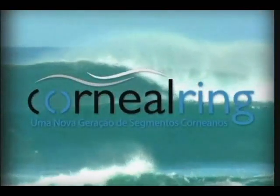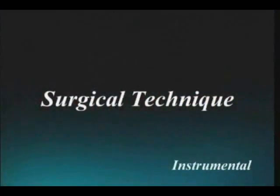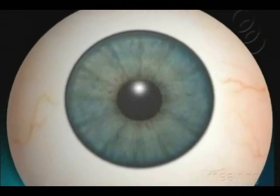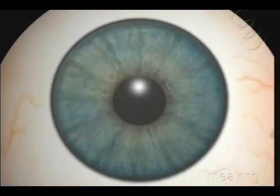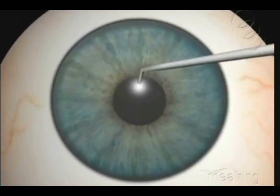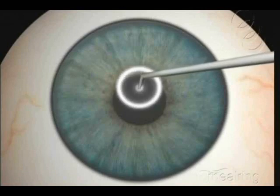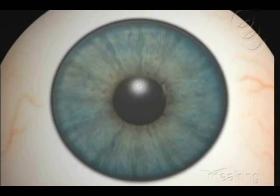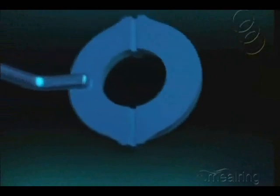Corneal ring, the new generation surgical technique. Ask the patient to look at the microscope light using the Sinski hook. Mark the light reflex in the cornea, considering the visual axis, not the pupil center. The double marker has to be positioned correctly.